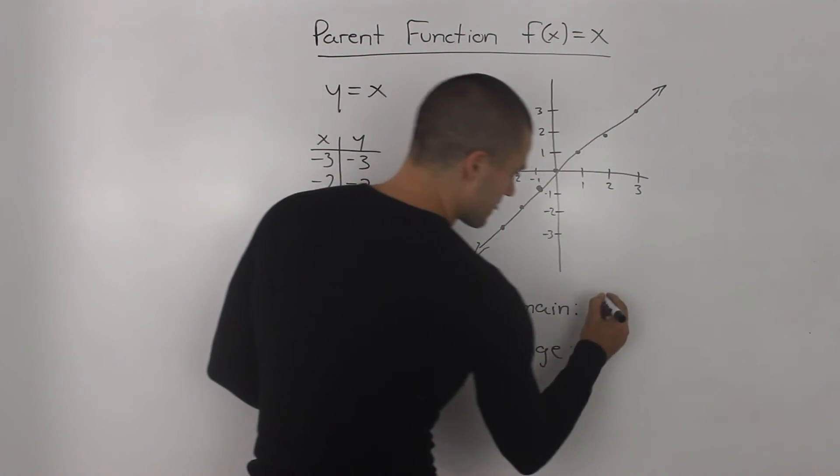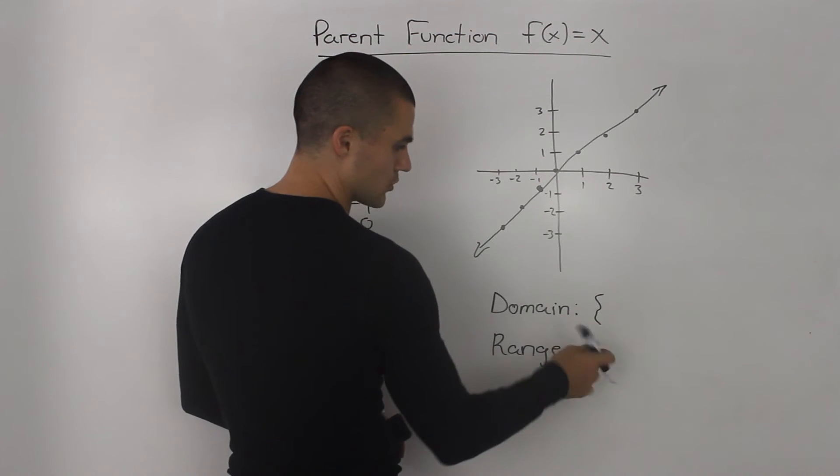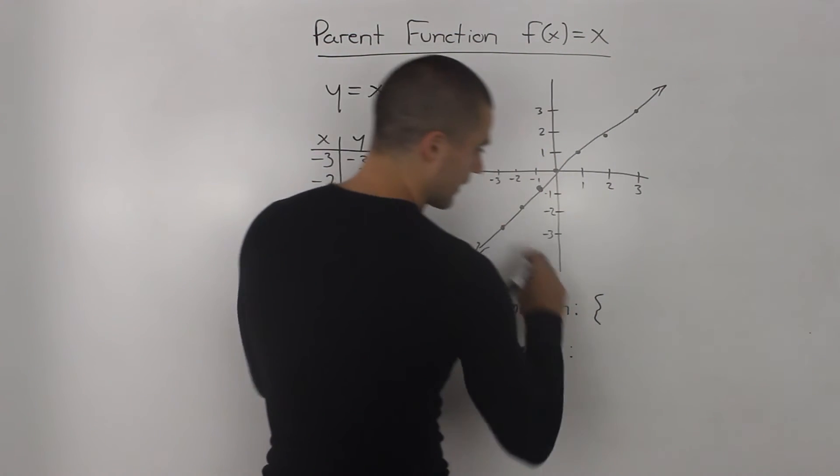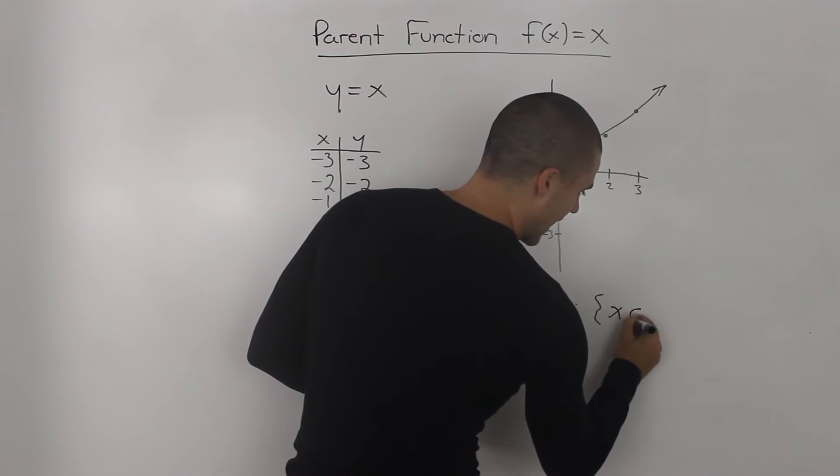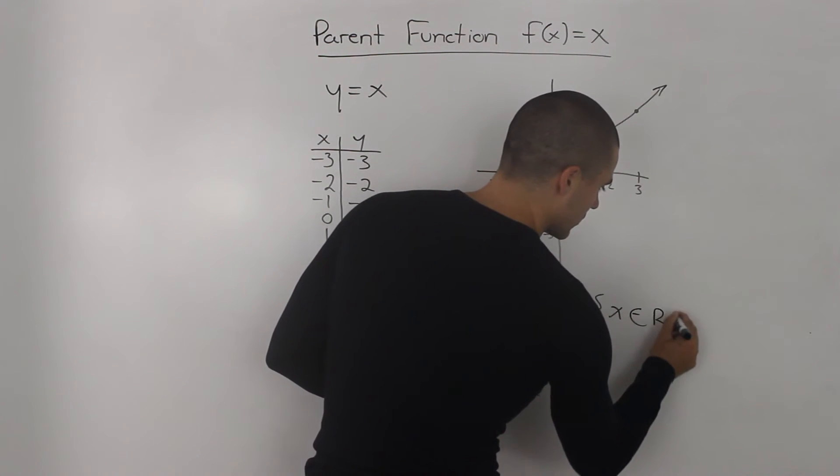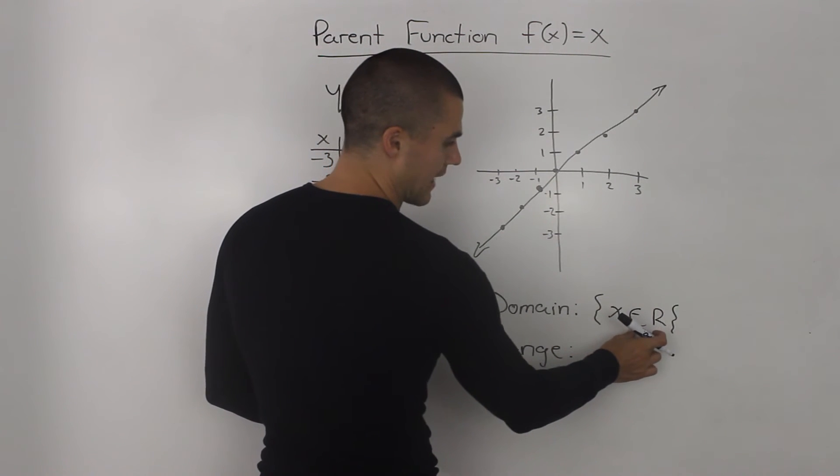So, the way we would write that is, we always put this squiggly bracket for domain and range. And if x can be anything, we write x is an element of real numbers. This x is an element,